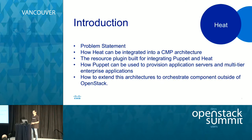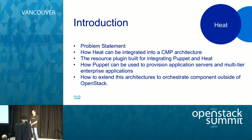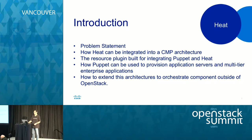For today's presentation, I'm going to cover a few topics. Start with a problem statement — what are we trying to solve with Puppet and Heat? We're going to talk about how Heat can be integrated into a CMP, which is Cloud Management Platform Architecture. I'll cover how the resource plugins were built for integrating Puppet and Heat, how Puppet can be used to provision application servers and multi-tier applications, and how to extend this architecture to orchestrate components outside of OpenStack.